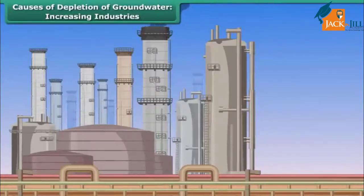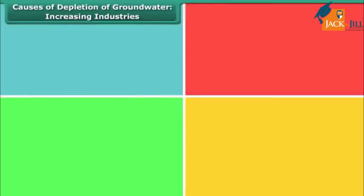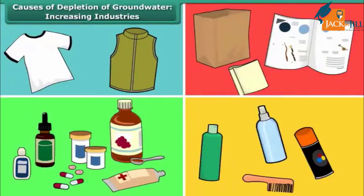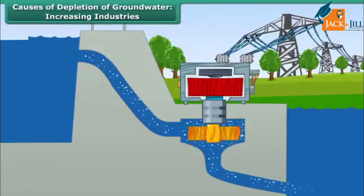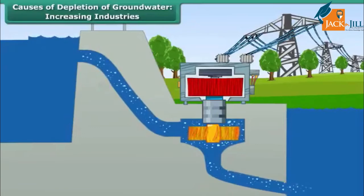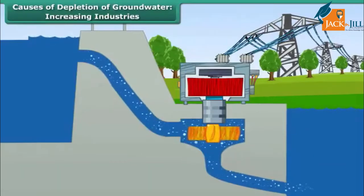Industry forms the backbone of the modern world. It is impossible to imagine life without industries. Almost all the products we use in our daily lives — such as clothes, paper, medicines, cosmetics, etc. — are industrial products. Industrialization is an ongoing process that will never come to an end. New industries are being set up every day to meet the growing needs of a rising population. These industries draw tons of groundwater every day for use in production processes, thereby depleting it.